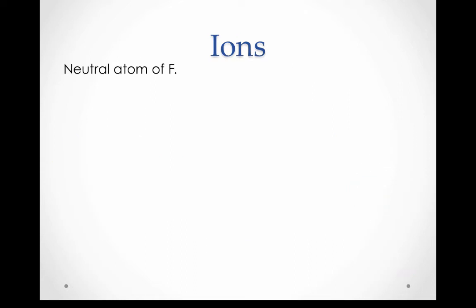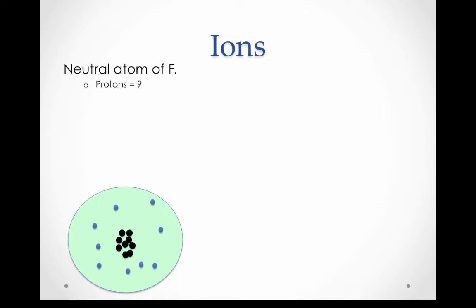Let's look at some specific examples now. Here's a neutral atom of fluorine. In a neutral atom of fluorine, we have nine protons and nine electrons. Therefore, it's a neutral atom right now.